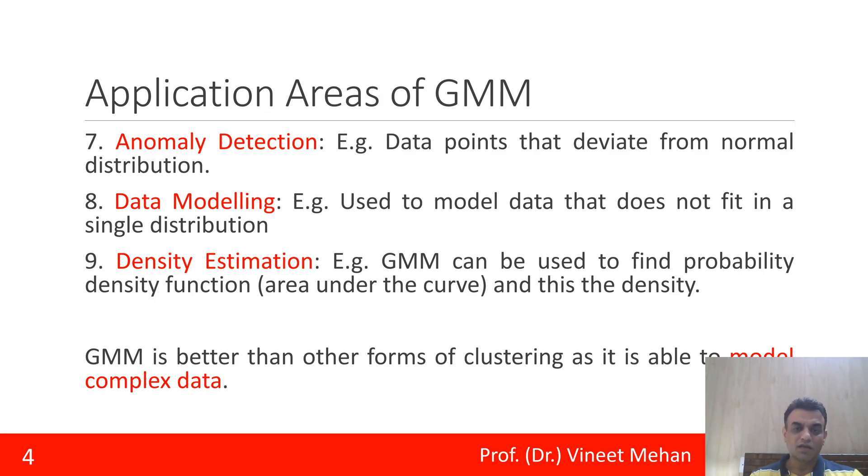Then is data modeling. It is used to model data that does not fit in a single distribution. Sometimes the data is complex, and when the data is complex then single distribution is not sufficient. For such distribution we can use Gaussian Mixture Model.